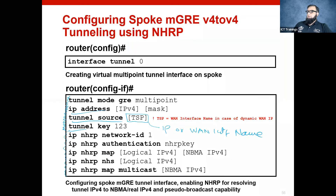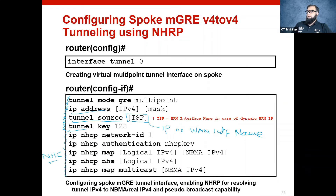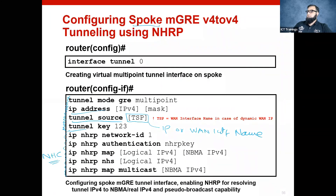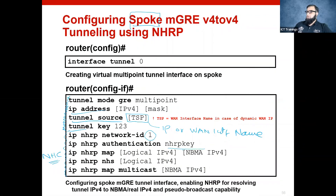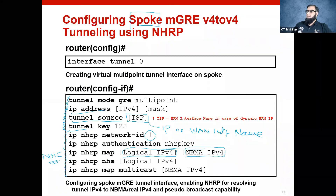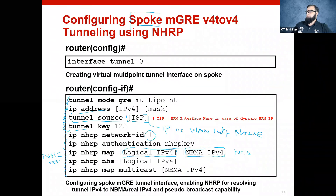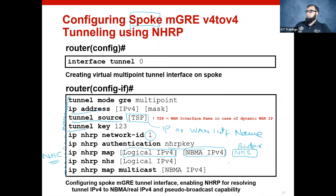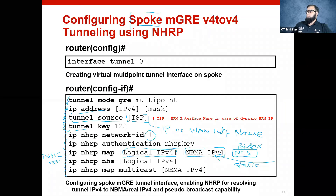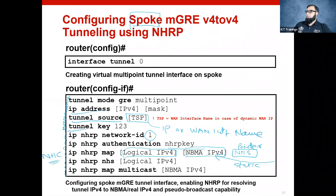And this was the NHRP configuration. This is from NHC's point of view, also known as spoke. In this we saw: NHRP network ID, key - these must match everywhere. Then the logical IP, which is the tunnel IP, to the physical IP which is the WAN IP - that mapping is there. This is the clue of your next hop server. This is the NHRP pointer that you are defining here. That is the reason that your NHRP IP should be static - the next hop server should have a static public IP.